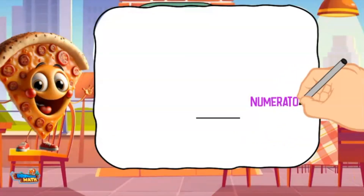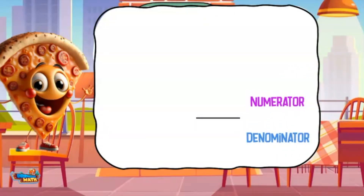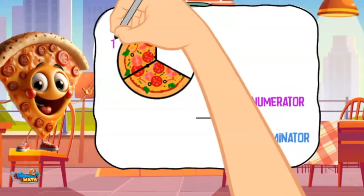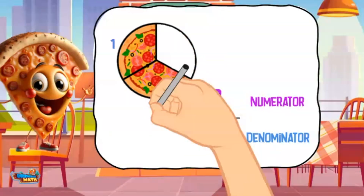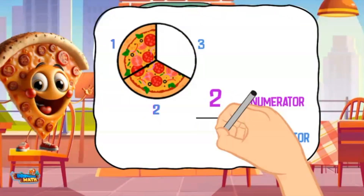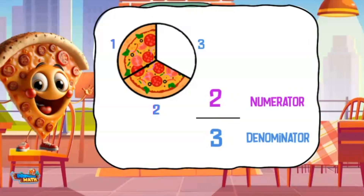When writing fractions in standard form we write the numerator over the denominator with numbers. The numerator in this fraction represents the pieces of pizza shown. There are two slices, so the numerator is two — we write the number two. Now we write the denominator. The denominator is the number of pieces of the whole. There are one, two, three. I put a three at the bottom of the fraction. It is read two-thirds.